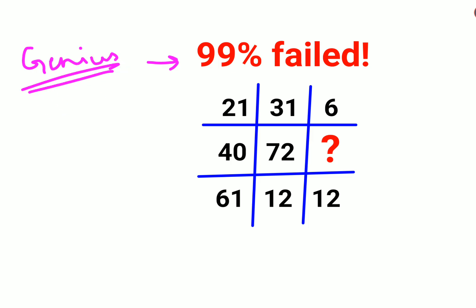Okay, now let's understand what to do. Here we have 21, then we have 31, and here we are getting 6. Here we have 40 and 72, and here we need to find out. We have 61, we have 12, and then we have 12 again.